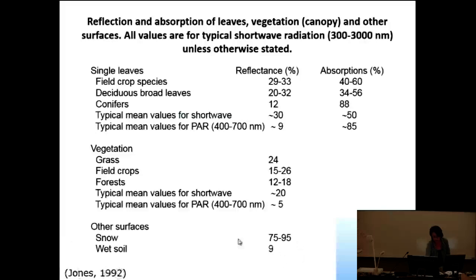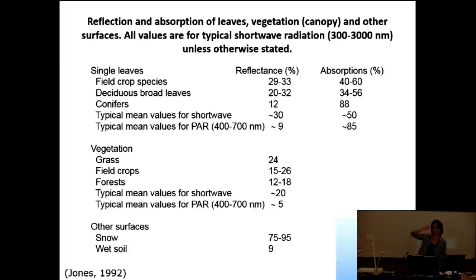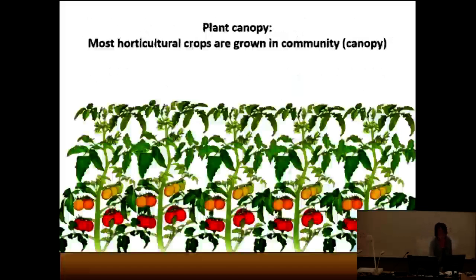Snow is a reference value — shortwave reflectance is very high, it's white snow. However, longwave radiation: snow surface absorbs longwave radiation at 90 percent or greater. Sometimes you get confused because snow is shiny, so you might think longwave radiation also reflects off the white surface. But longwave radiation is something you can't see. Whether it is shiny or not is based on your eye, not representing longwave radiation.